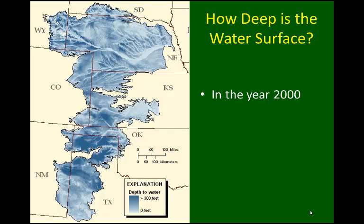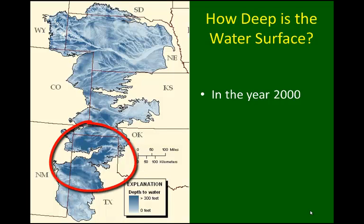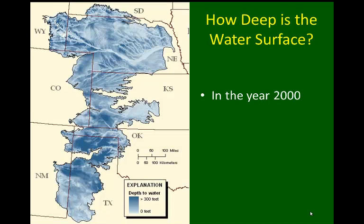How far down do we have to go to reach the water surface? In the year 2000, this map was generated with data collected across the aquifer to determine that distribution. In very light shades it tends to be very shallow — particularly from the northeastern corner of Colorado moving through southern Nebraska, a swath of very near-surface groundwater where the South Platte River joins the North Platte. Moving further south through the Panhandle of Texas, the water table tends to be very deep, in excess of 300 feet in some cases.